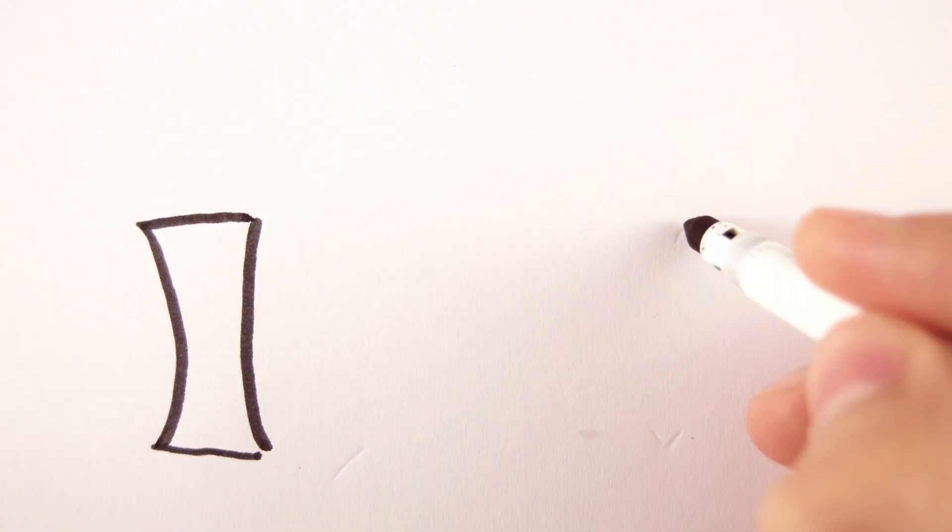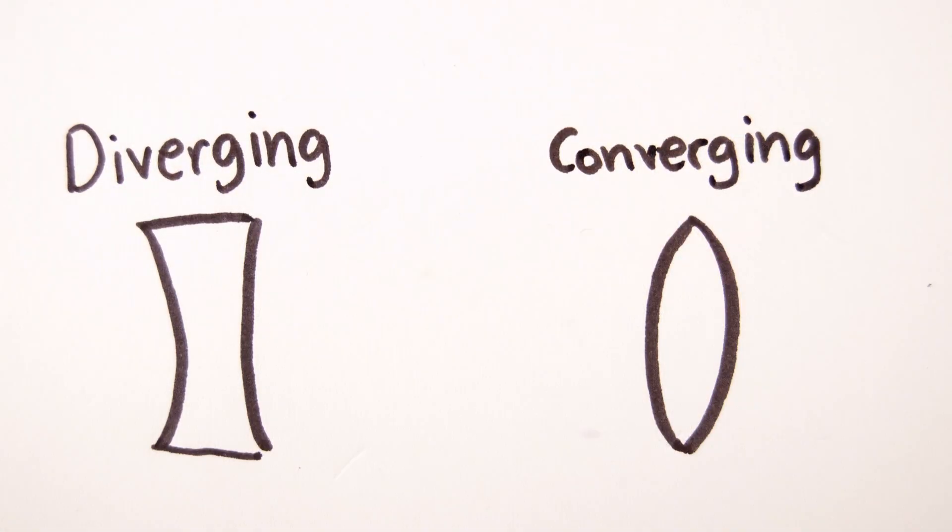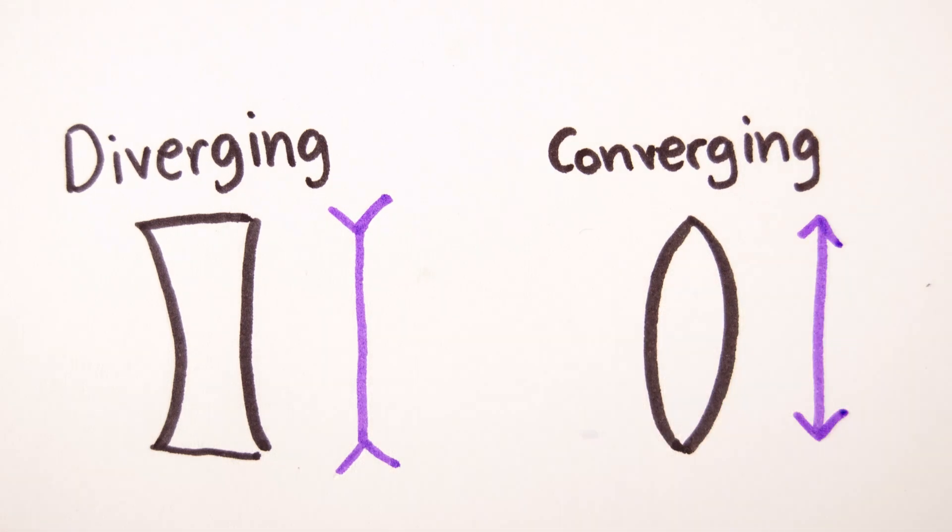A diverging lens is sort of like the opposite of a converging lens because it curves inwards instead of outwards. It's represented with this symbol. Interesting, I know.